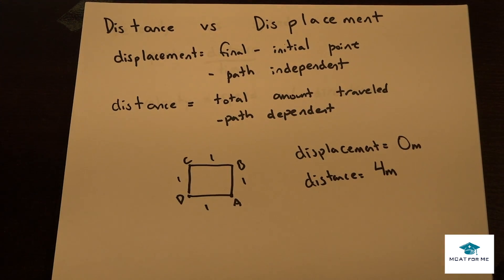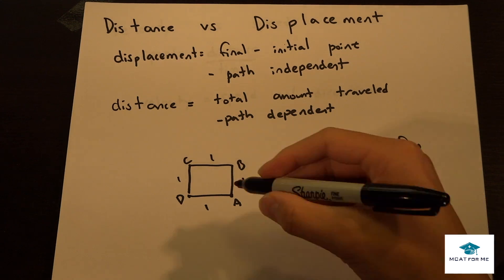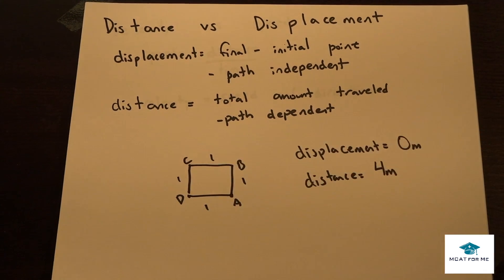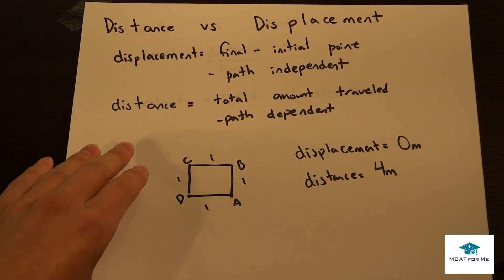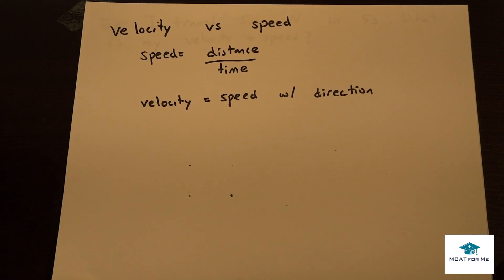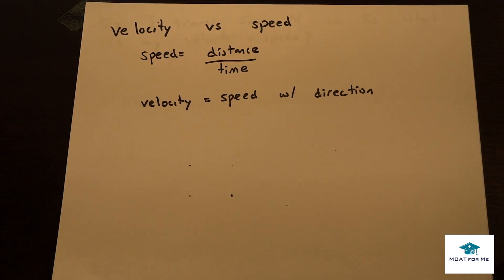We can see that distance and displacement, although for the most part won't make a difference, in certain cases — especially when you make the same changes back — it will make a huge difference. We see that with velocity and speed. Speed is distance over time, not displacement. Velocity is the speed including some type of direction.